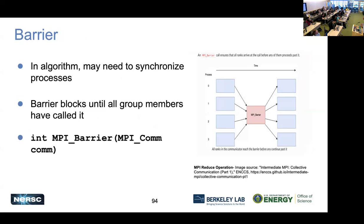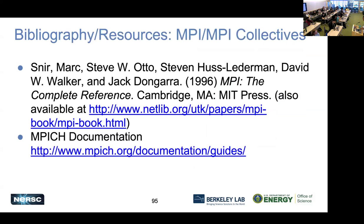Another important communication is the barrier operation. A barrier can be placed as a fail-safe to make sure all processes reach a specific point before they move on. A barrier is basically a brick wall or gate that all processes have to come to, and once everyone is there, the program is allowed to continue. These different collective operations utilize different communication groups to send and receive messages and transmit different data.